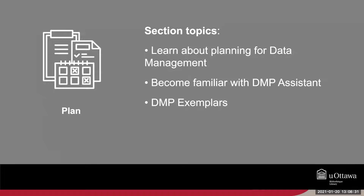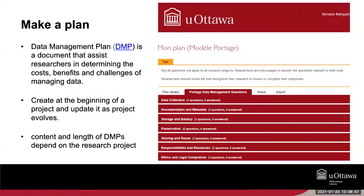Now that we have an understanding of what research data management is, what we mean by research data, and some of the requirements that may be imposed on us, the first step in our lifecycle model is to plan and design the approach you will take to manage your research data throughout and after your project. The best tool to do that is a data management plan. At the most basic level, a data management plan helps researchers stay organized and coordinated throughout the research process. By laying out a clear plan of action, DMPs make it possible to address potential challenges before they come up.